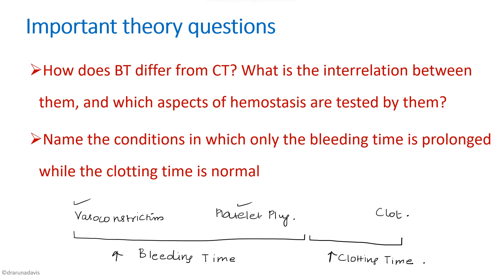The question 'name the condition in which only bleeding time is prolonged while clotting time is normal' refers to defects in blood vessels or platelets. Platelet defects include decreased platelet count as in thrombocytopenia, or decreased platelet function as in thrombasthenic purpura. Understanding these basic concepts allows you to elaborate on the different diseases.